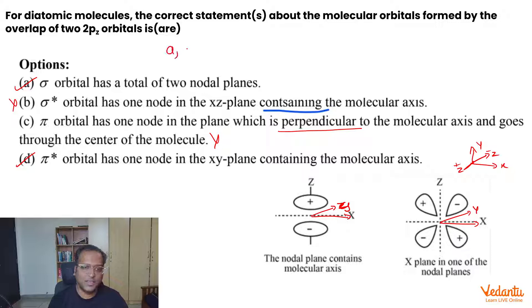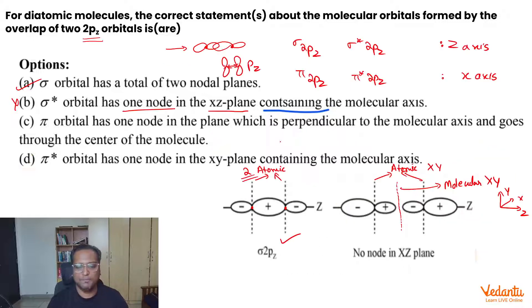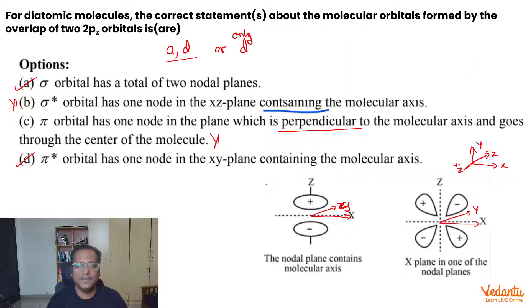Hence, the answer is A, D. Now, the answer could very well be only D. Why only D? In option A, as you can see, there are 2 atomic nodal planes in the sigma orbital. There is no molecular nodal plane. Hence, there is a possibility that the answer could very well only be D, not AD. Thank you so much for joining, and stay tuned for our next one.